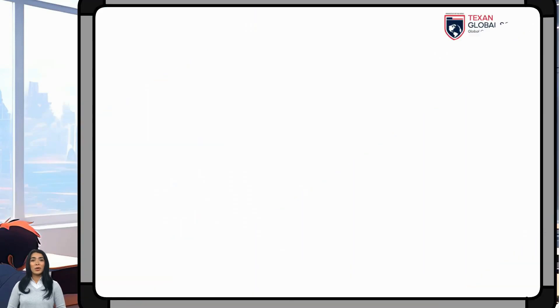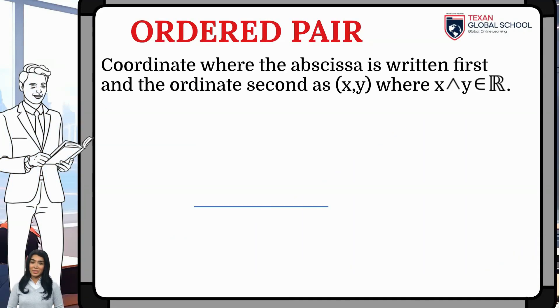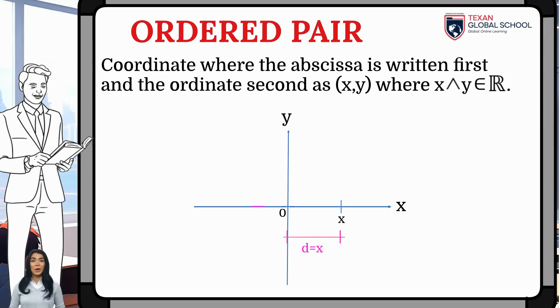An ordered pair is the coordinate where the abscissa is written first and the ordinate second. Each point on the plane corresponds to a coordinate where x and y belong to the set of real numbers.